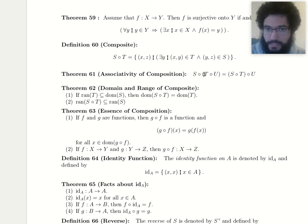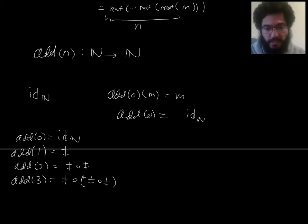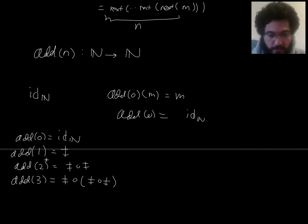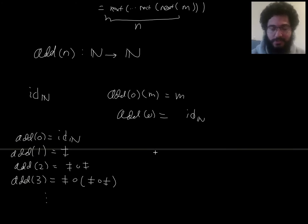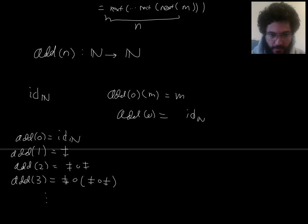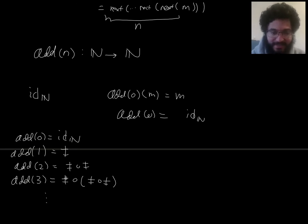We have seen in theorem 61 that composition is associative — even when composing arbitrary sets of pairs, it doesn't matter where you put the parentheses. So it's okay not to write parentheses here, but I'm writing them because I'll put dot-dot-dot, which means I need to provide a recursion rule. I'm going to choose that at each step the recursion rule is: compose on the left by another one of the 'adding one' type functions.